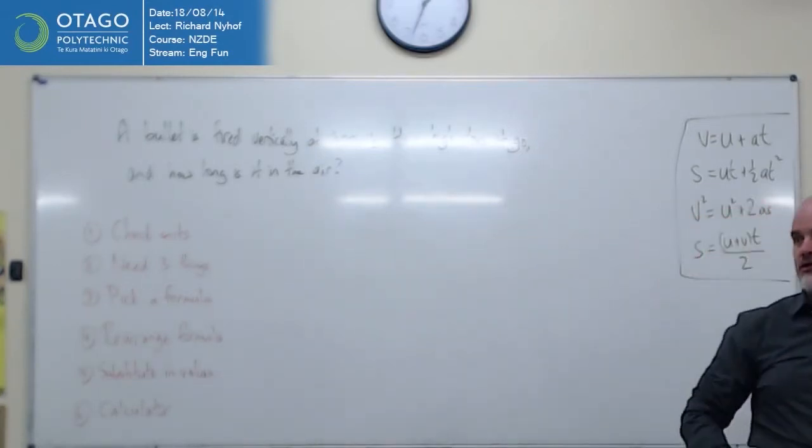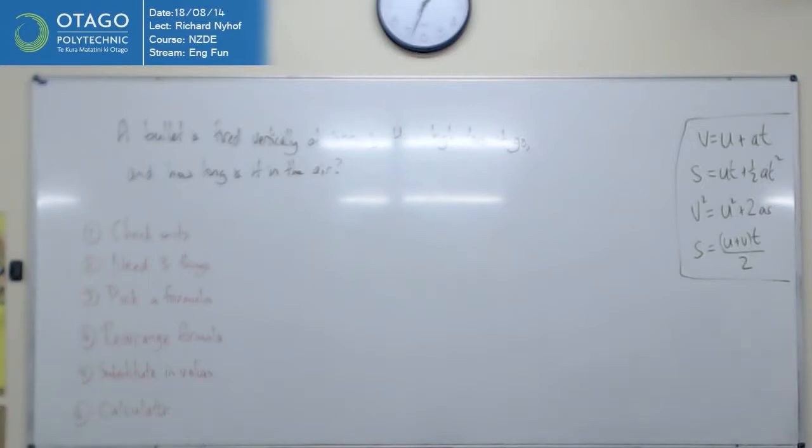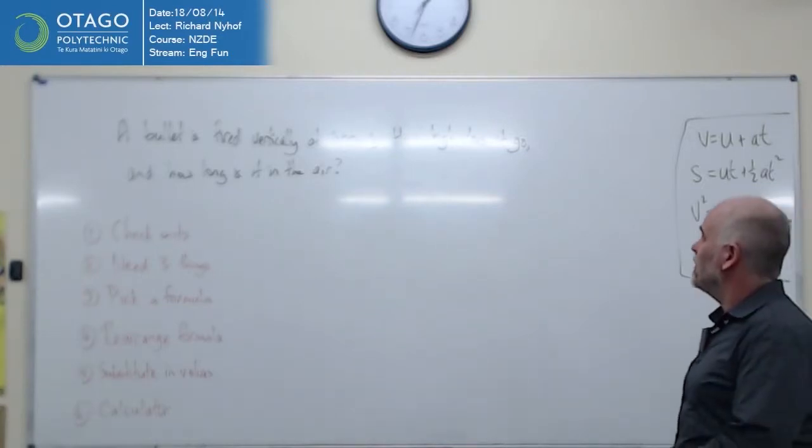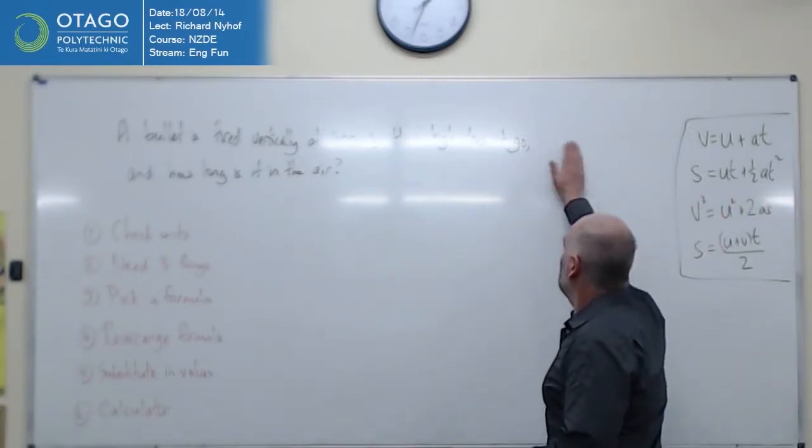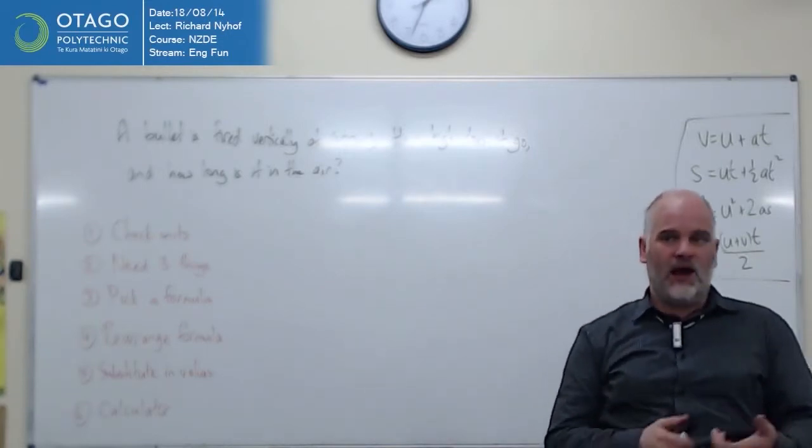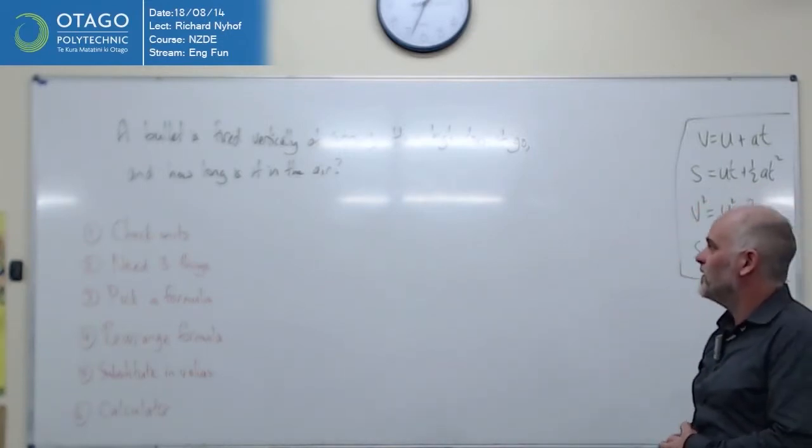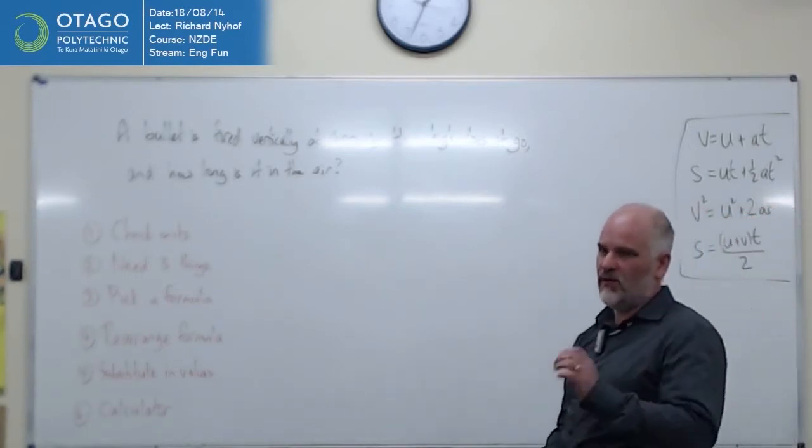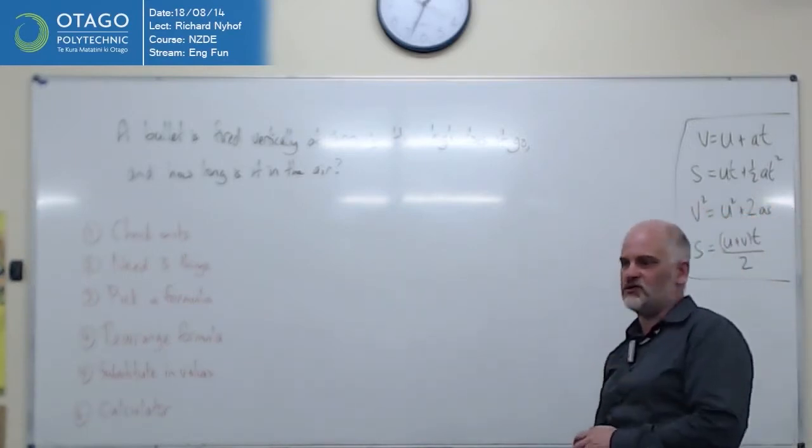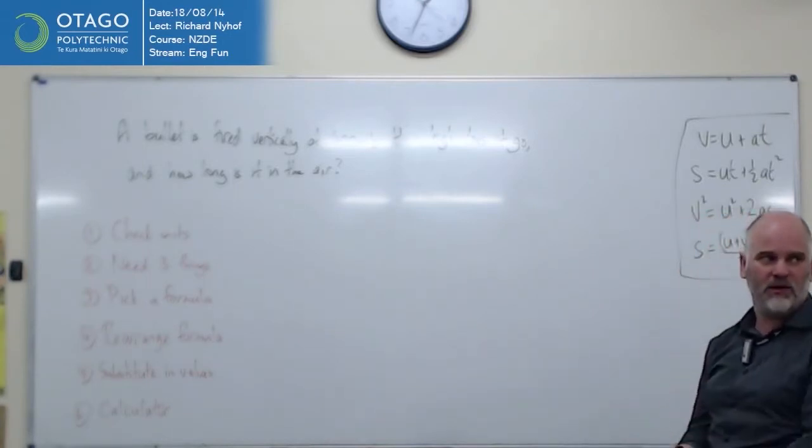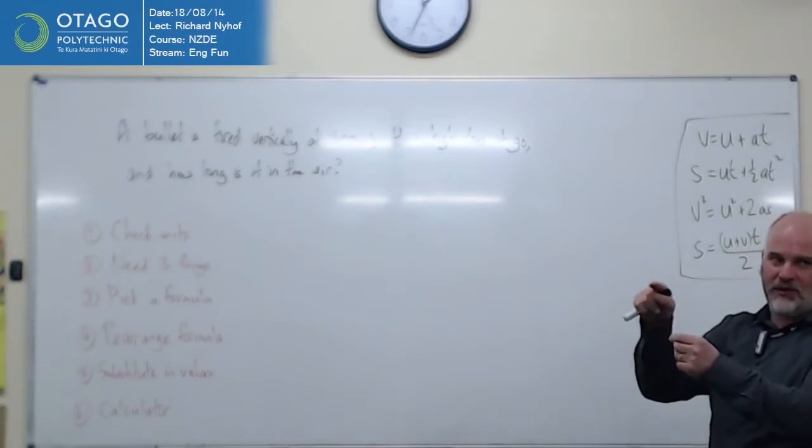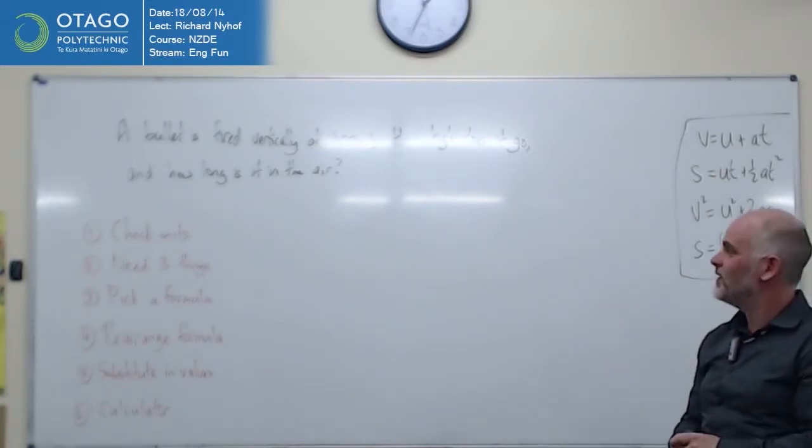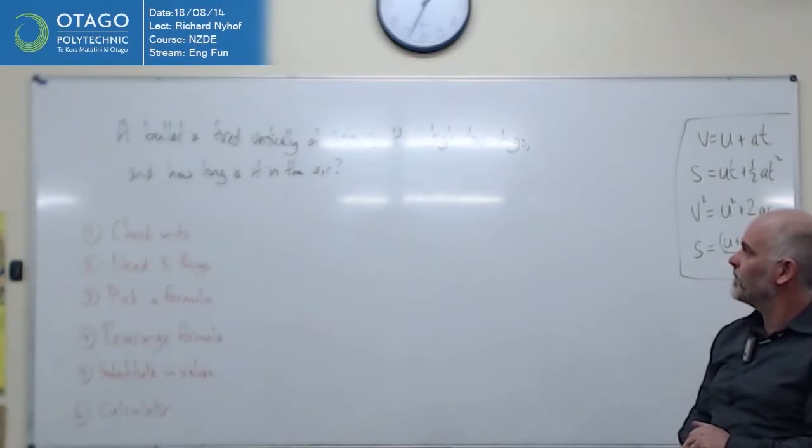So he's going to shoot a bullet straight upwards. Leaves the gun at 400 meters per second. And the question is how high does it go in the air and how long before it comes back to the ground, assuming we're firing it from ground level. We'll just call the top of the gun zero.